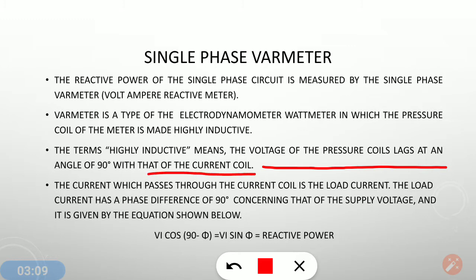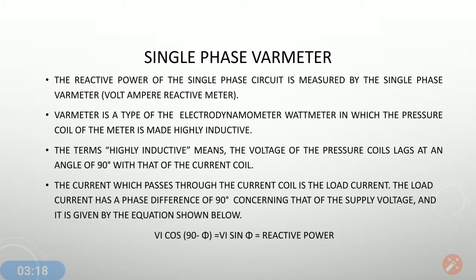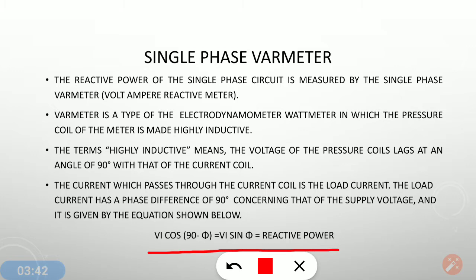Due to the high inductance of the coil, the voltage of the pressure coil lags at an angle of 90 degrees with respect to the current coil, so the difference between the voltage and the current becomes 90 degrees or quadrature. The current passing through the current coil is the load current, which has a phase difference of 90 degrees with respect to the supply voltage. This gives the equation: VI cos φ = VI cos(90 − φ) = VI sin φ, which is the reactive power we are measuring.